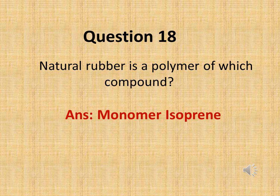The next question is: which blood group is known as universal donor? Persons with O blood group negative are known as the universal donor.